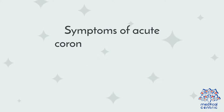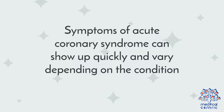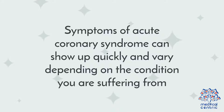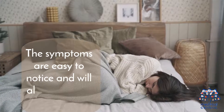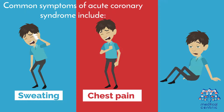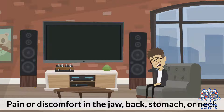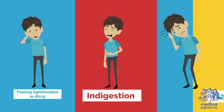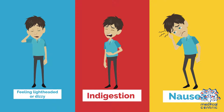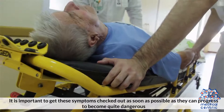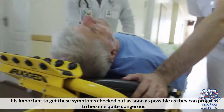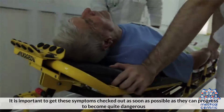Symptoms of acute coronary syndrome can show up quickly and vary depending on the condition you are suffering from. The symptoms are easy to notice and will alert you once they appear. Common symptoms include: 1. Sweating; 2. Chest pain; 3. Shortness of breath; 4. Pain or discomfort in jaw, back, stomach, or neck; 5. Feeling lightheaded or dizzy; 6. Indigestion; 7. Nausea. It is important to get these symptoms checked as soon as possible as they can progress to become quite dangerous.